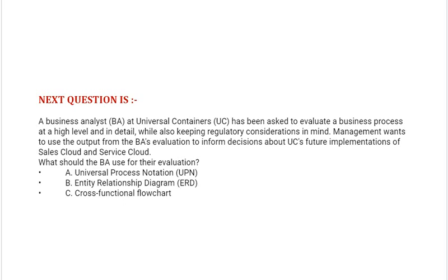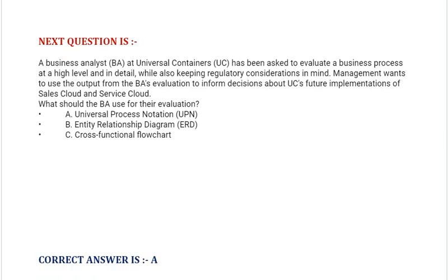What should the BA use for their evaluation? Option A: Universal Process Notation UPN. Option B: Entity Relationship Diagram ERD. Option C: Cross-functional flowchart. Correct answer is Option A.